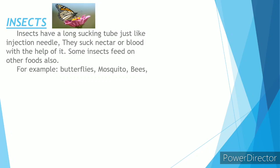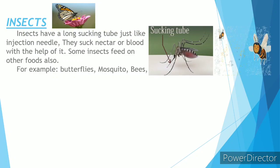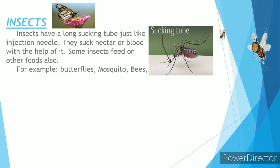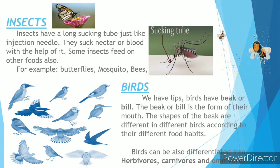Insects like butterflies, mosquitoes, and bees all have a long, tube-like structure in their mouth, like an injection syringe. This is called a proboscis. They use it to suck nectar from flowers or blood from the human body. See the pictures of their proboscis.